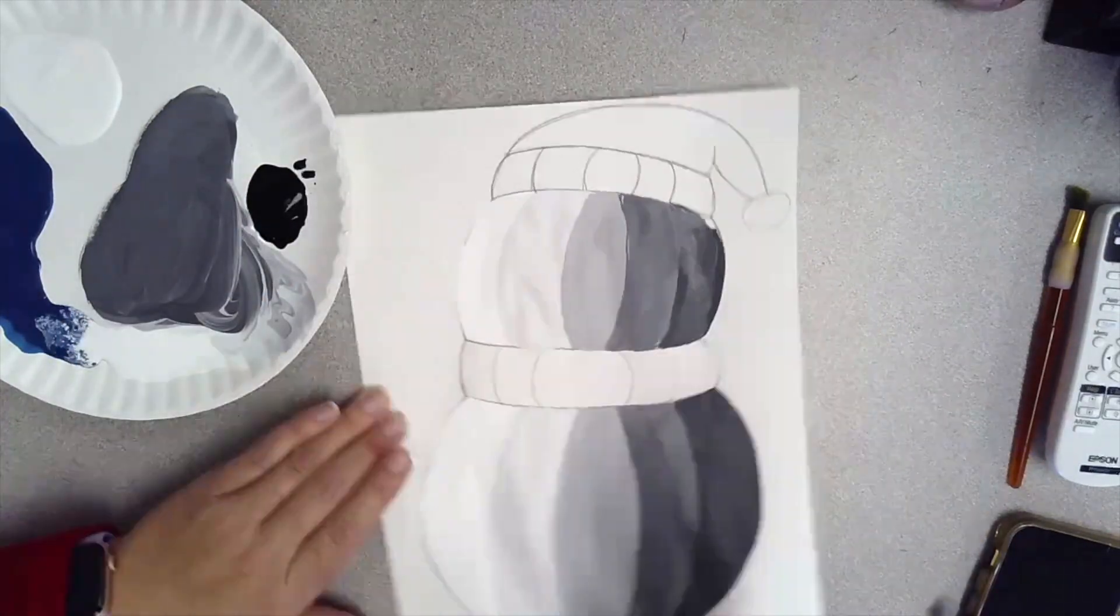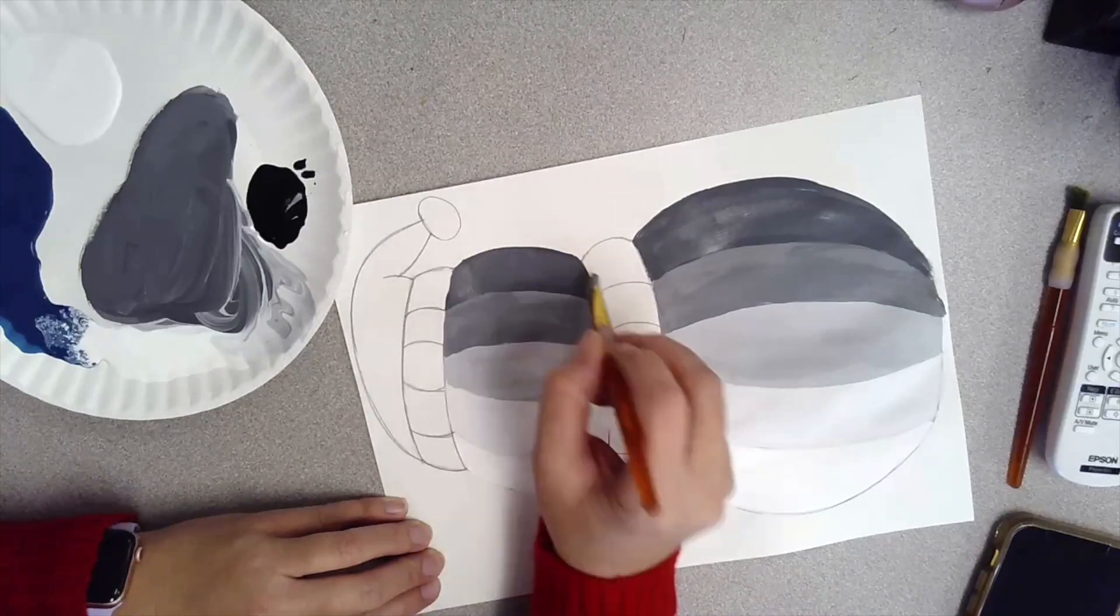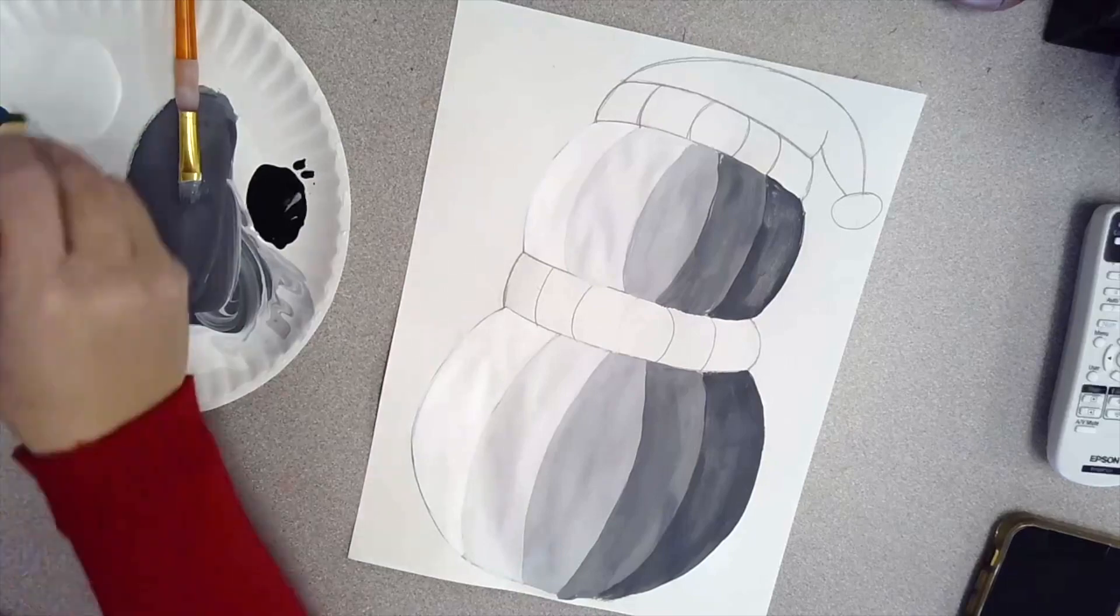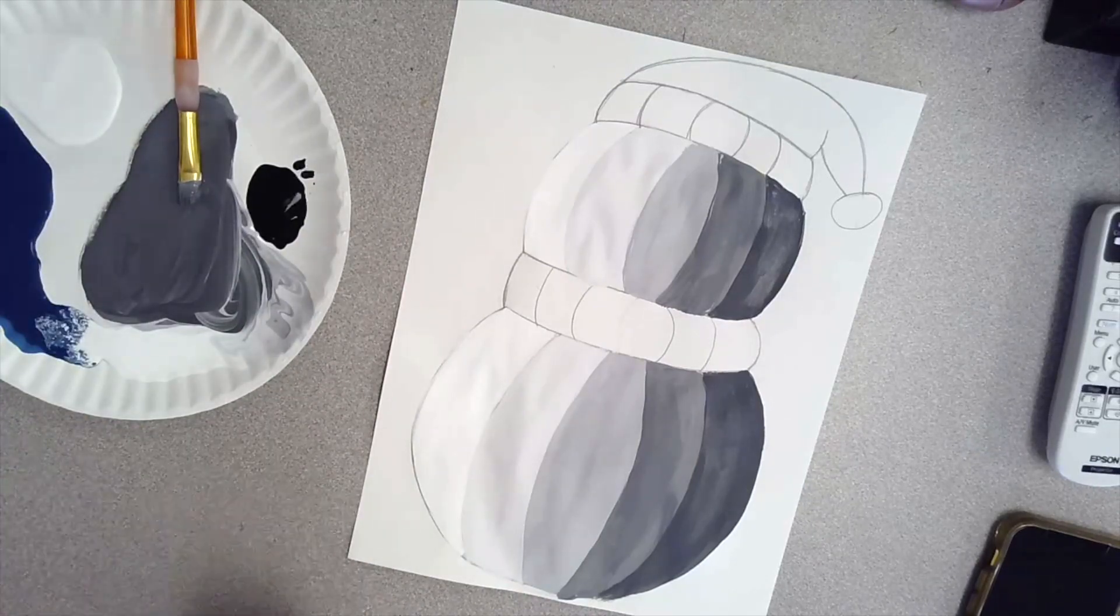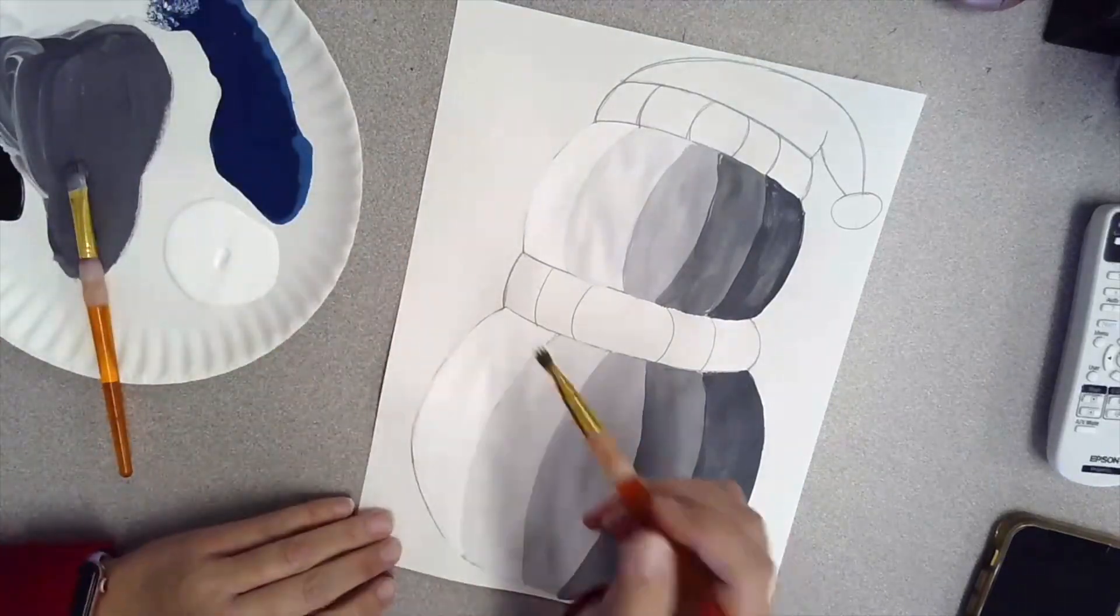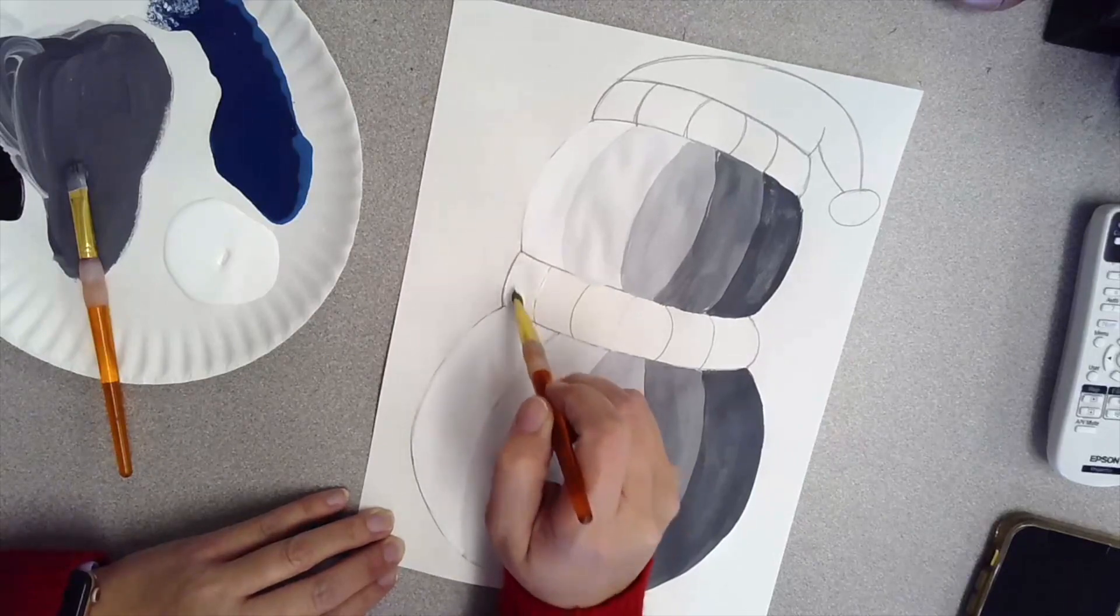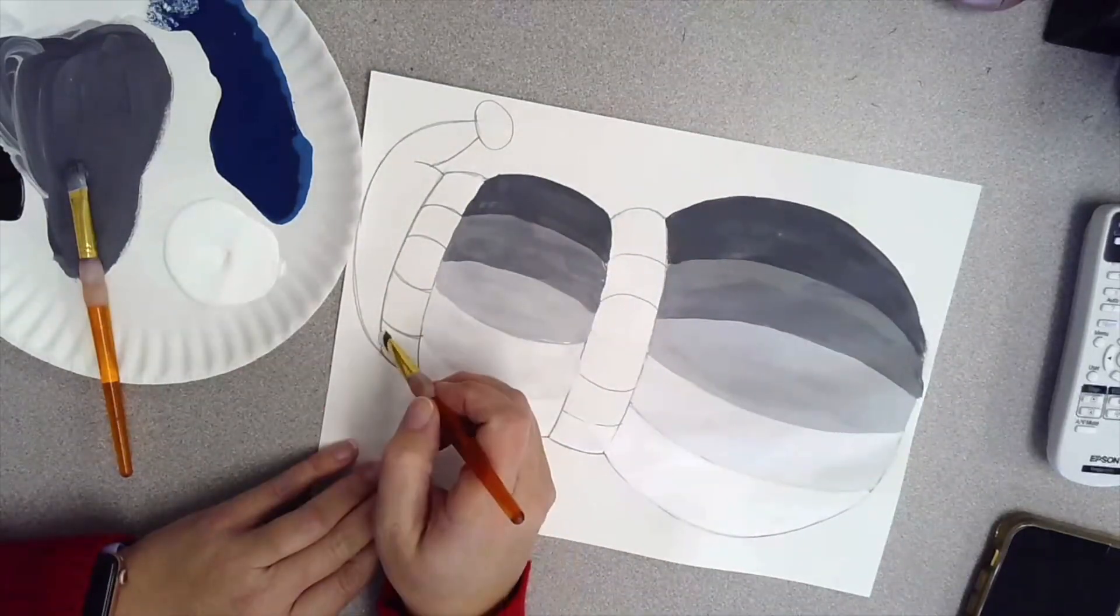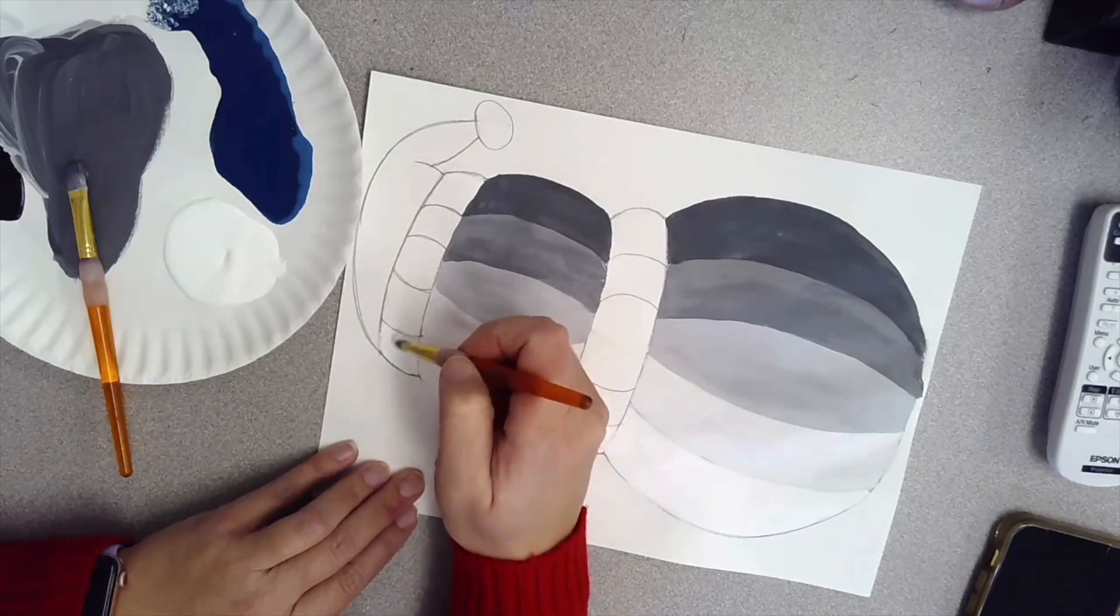Once you're done with the snowman, it's time to pick a color for your hat. The hat and the scarf are going to be the same color. I have already picked turquoise for my color, so I paint the first section of my scarf and my hat white, just like I did with the snowman.